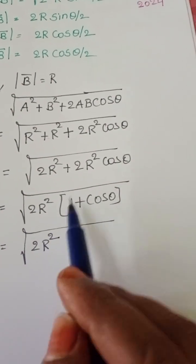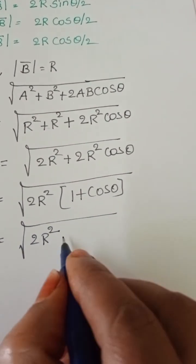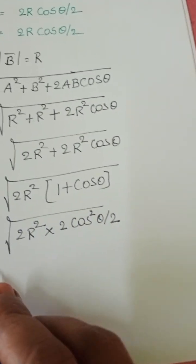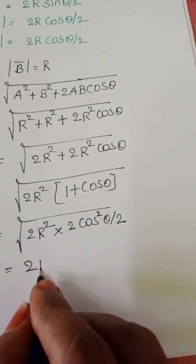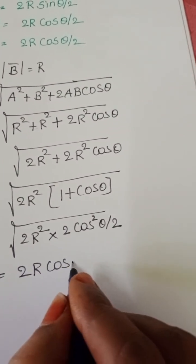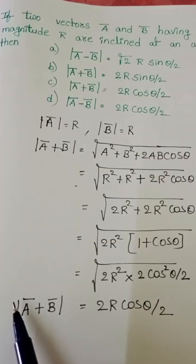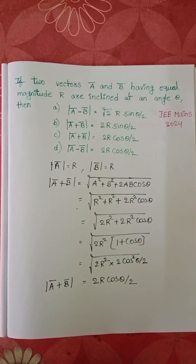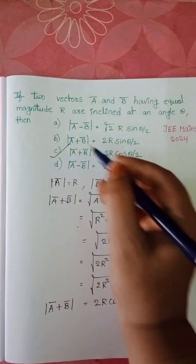Here we know 1 plus cos theta equals 2 cos square theta by 2. Then it becomes 2r cos theta by 2. Mod a bar plus b bar equals 2r cos theta by 2. Third option is correct.